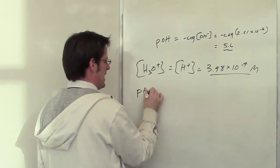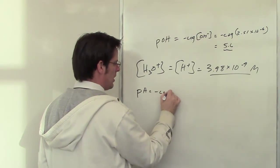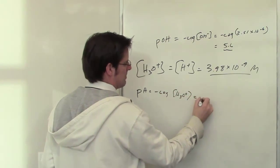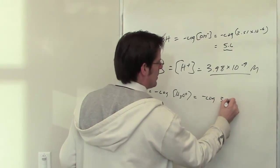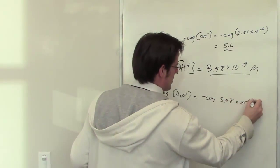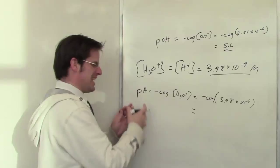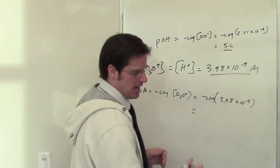The pH is going to be negative log of the hydronium ion concentration, which is the same thing as negative log of 3.98 times 10 to the negative 9th. If I throw that into my calculator, I get a pH value of 8.4.